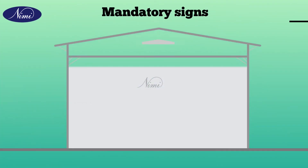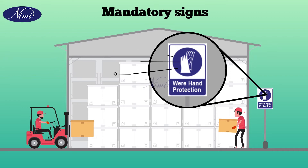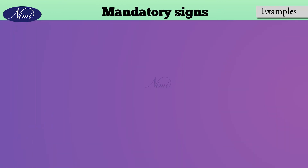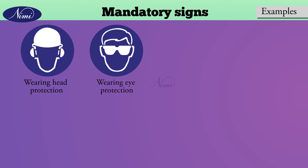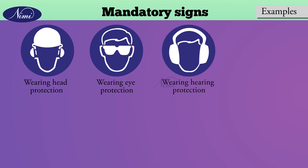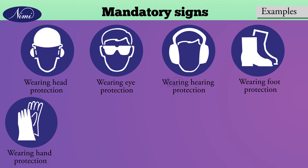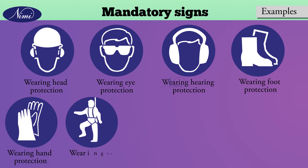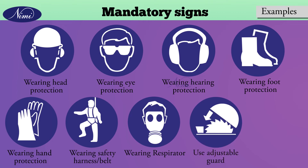Mandatory signs are circular with a white symbol on a blue background, showing what must be done. Examples: wearing head protection such as a helmet is mandatory; wearing eye protection such as goggles is mandatory; wearing hearing protection such as ear guards or ear muffs is mandatory; wearing foot protection such as safety shoes is mandatory; wearing hand protection such as gloves is mandatory; wearing a safety harness or safety belt is mandatory; wearing respiratory protection such as a respiratory mask is mandatory; use an adjustable guard while working; and wash your hands here.